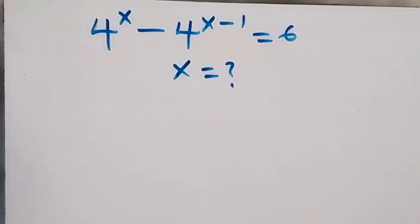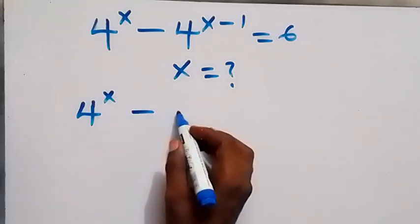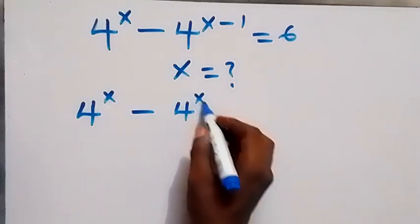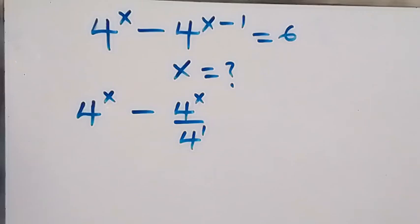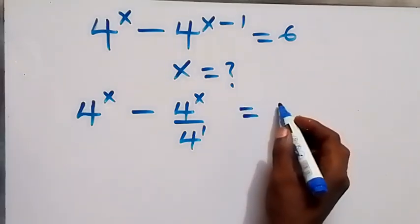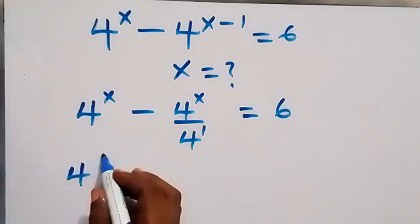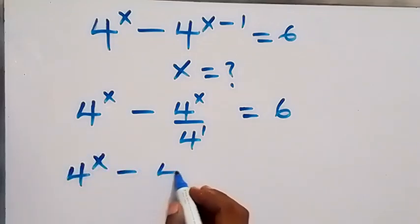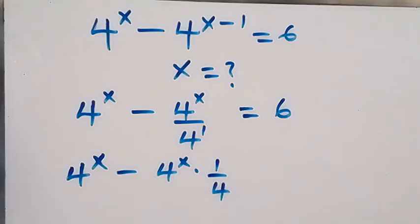Hello, you are welcome. How to solve this nice algebra problem. From here, let's write this as 4 raised to power x minus 4 raised to power x over 4 raised to power 1, from the law of indices, which equals 6. This can also be written as 4 raised to power x minus 4 raised to power x times 1 over 4 raised to power 1.